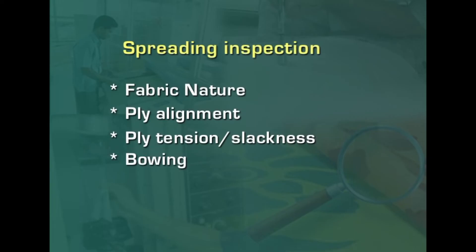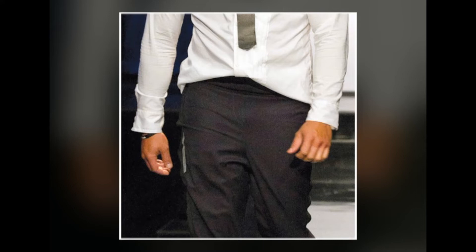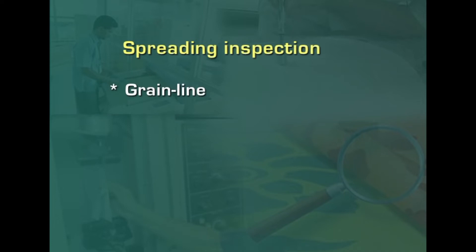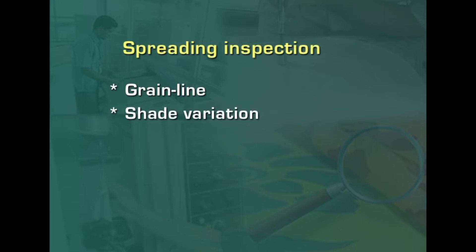Another defect is bowing — the distortion of filling yarn from a straight line across the width of fabric — which causes unbalanced stresses in the fabric, resulting in components being too tight or too slack and undersized. Splicing — placing one bundle after another — also has possibilities for defects. Grain lines: if patterns are not placed properly as per the fabric grain line, the drape of the final garment will be affected. Shade variation: if two fabrics with different shades are laid up and the variation exceeds tolerance, one part of the garment will be lighter than another.